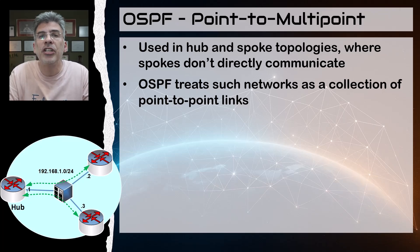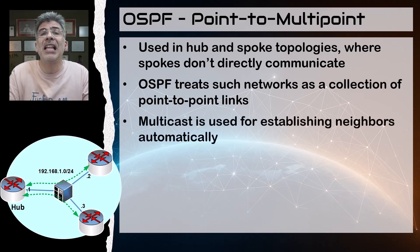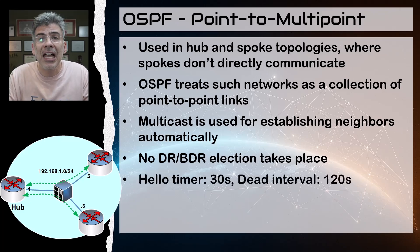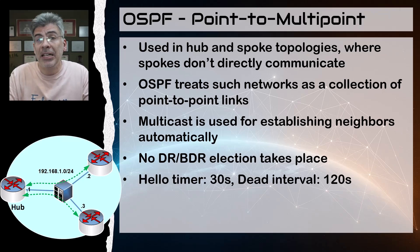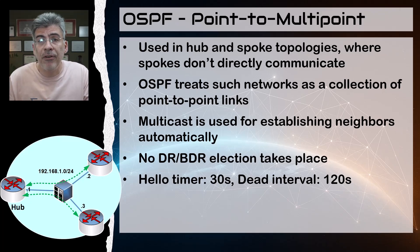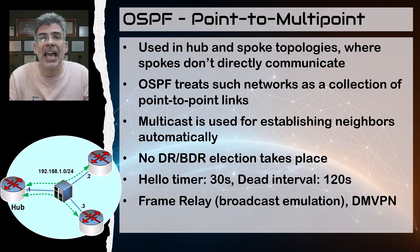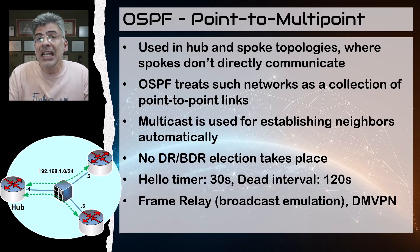Much of what happens in the point-to-point network type also applies in point-to-multipoint. This network type sees only one device on the other end of each individual link, so neighbors are established automatically using multicast. Point-to-multipoint networks do not maintain DR/BDR roles for the same reason as point-to-point. The default hello timer is 30 seconds and the dead timer is 120 seconds. This network type is used with frame relay, for example, with the broadcast keyword set for frame relay maps — this makes frame relay emulate multicast by sending multiple unicast messages over each individual link.